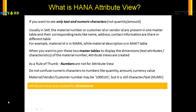Attribute views are created for dimensions. As we've been saying in this course, attribute views are only for master data, and master data is nothing but the dimensions. Dimensions are the assets of the company which do not change that often — your employee ID will not change, or the material number for a particular material will not change, nor will the description usually. Therefore they are called master data, and the joins with which we view these tables serve as the attribute view. Let's do it.